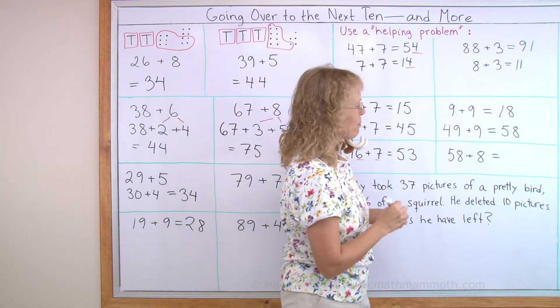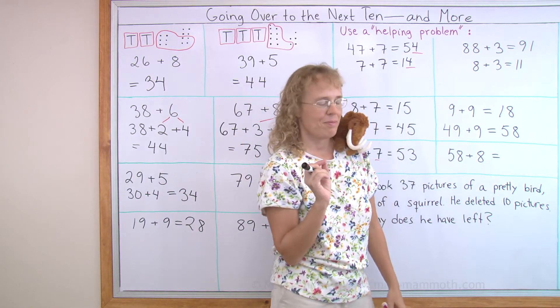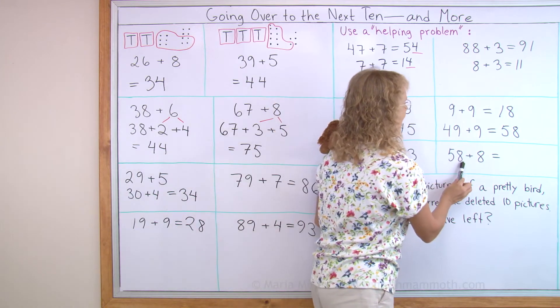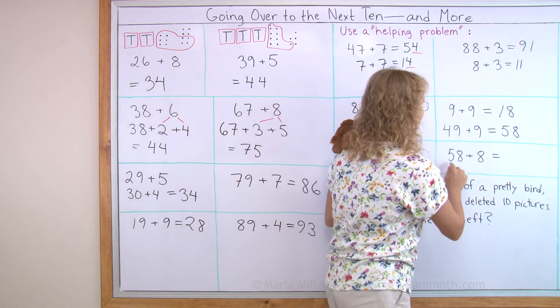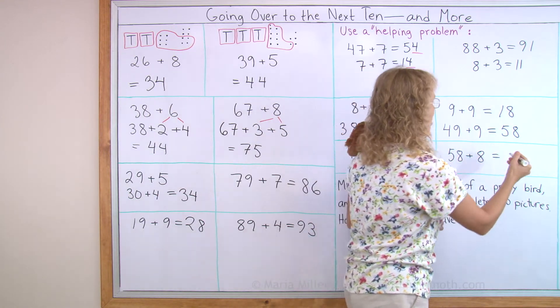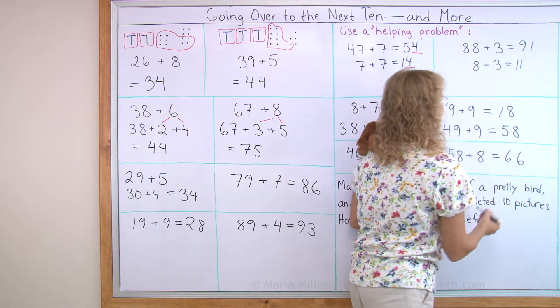One last one, try it on your own. 8 plus 8 is 16, which is 6 over the 10. And so this one will be 6 more than the next 10, which is 66.